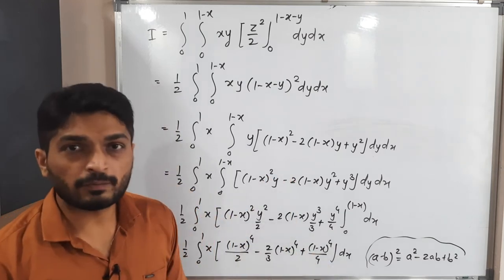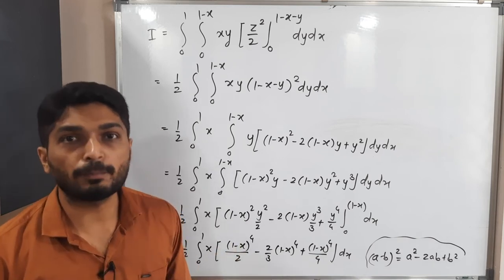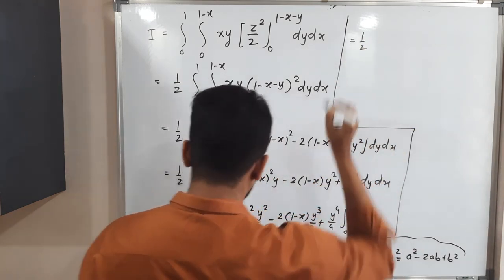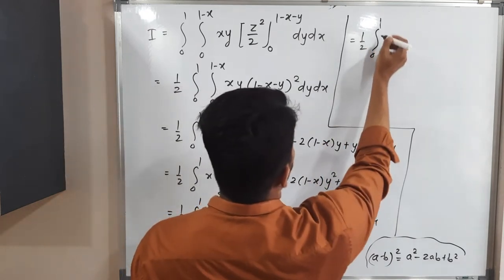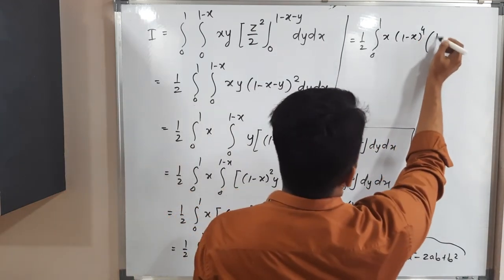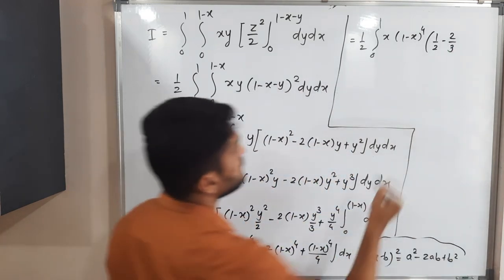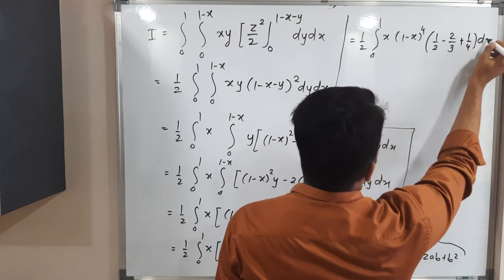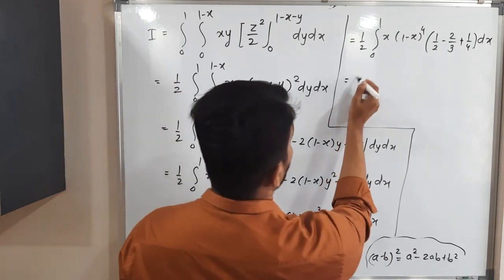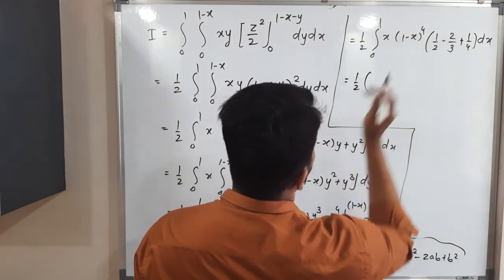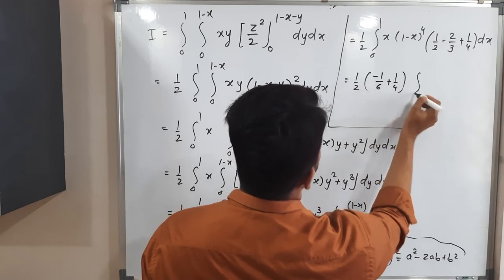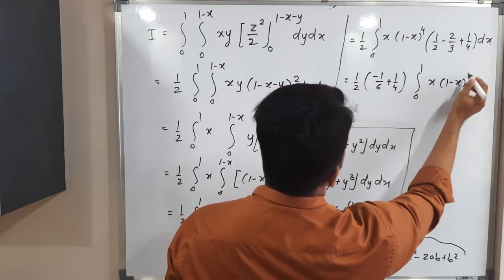After substituting the upper limit y = 1 − x, each term contains (1 − x)⁴ as a factor. Taking (1 − x)⁴ common from the bracket gives the constants 1/2 − 2/3 + 1/4. This simplifies to (3 − 4 + ... )/... . So we have (1/2) · [1/2 − 2/3 + 1/4] · ∫₀¹ x·(1 − x)⁴ dx.